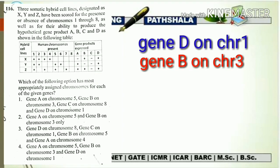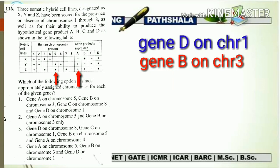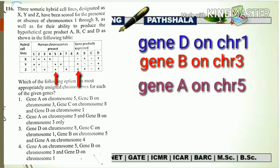Now only one gene is left, that is gene A. We have to tally the overall expression of gene A with the given chromosomal data. Gene A is absent in hybrid cell line X, present in Y, and again present in Z — showing expression only in Y and Z, absent in X, giving the pattern minus, plus, plus. Chromosome number 5 shows the same pattern: minus, plus, plus. So we concluded that gene A is coded by chromosome number 5.